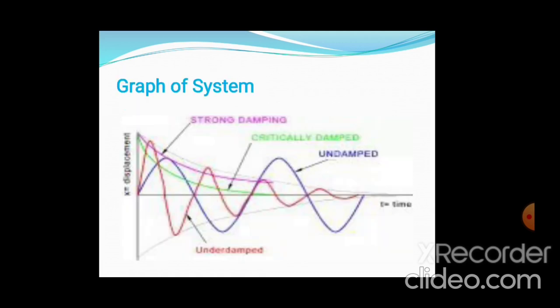Looking at the graphs of time versus displacement, the graphical nature of different systems is shown. Strong damping shows degradation; critical damping returns quickly to equilibrium; the undamped situation shows no effect of the applied forces on the oscillation.